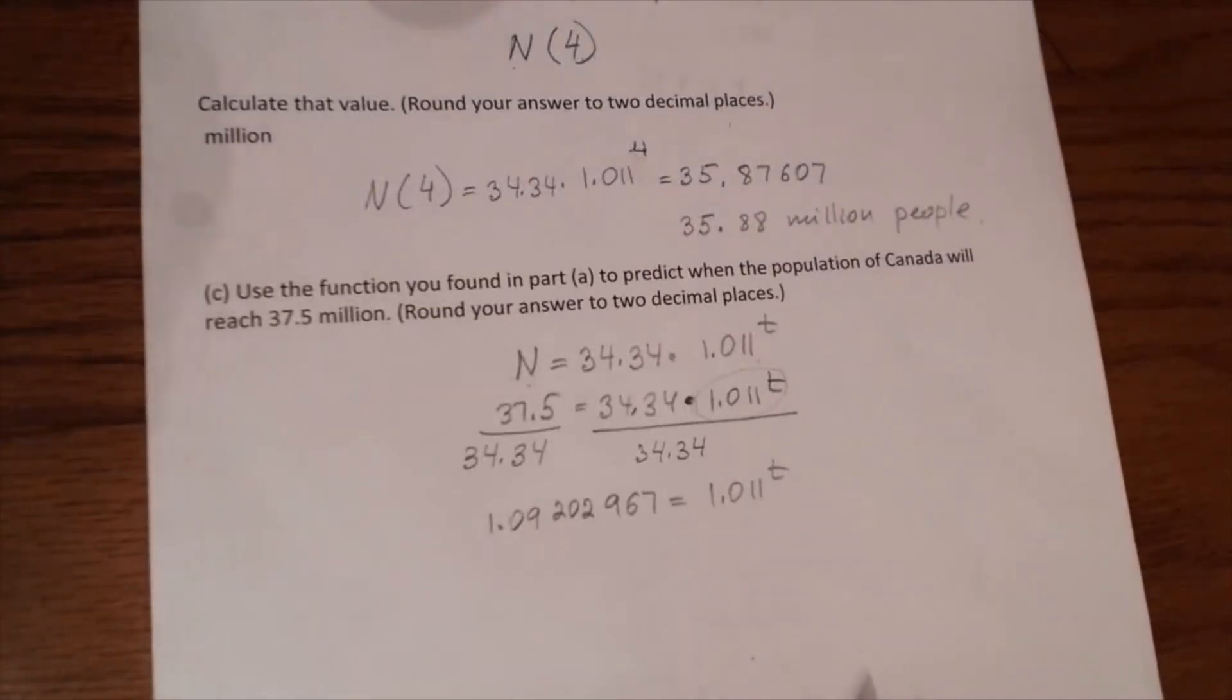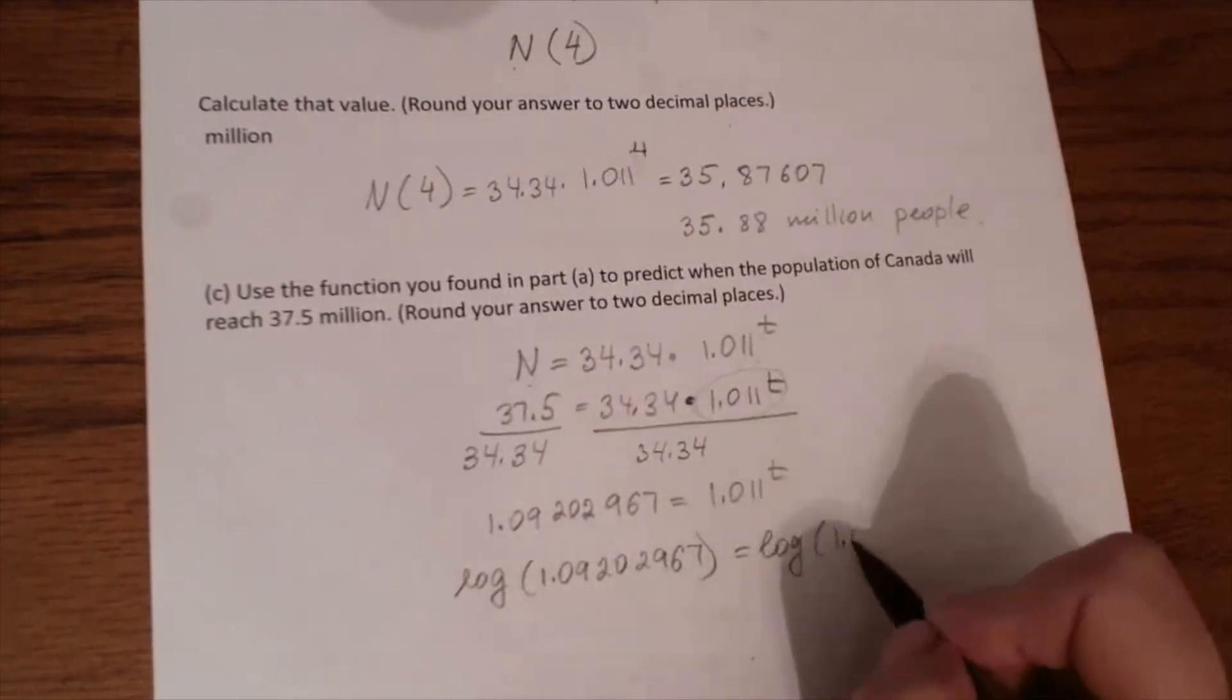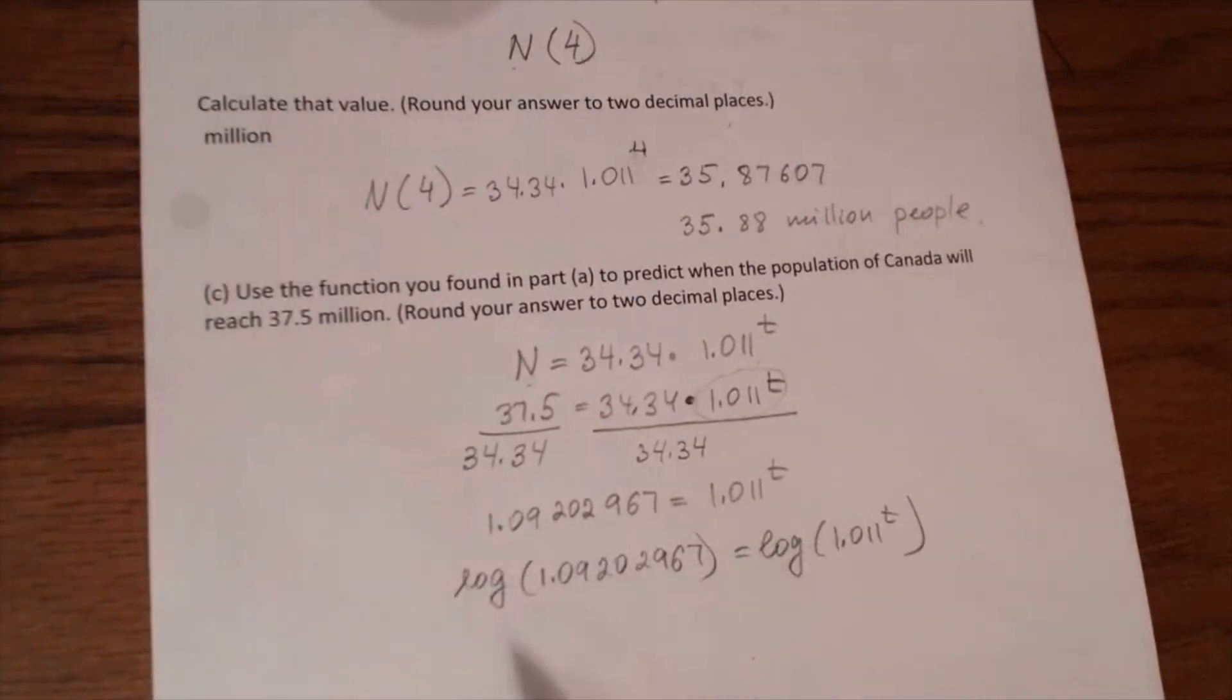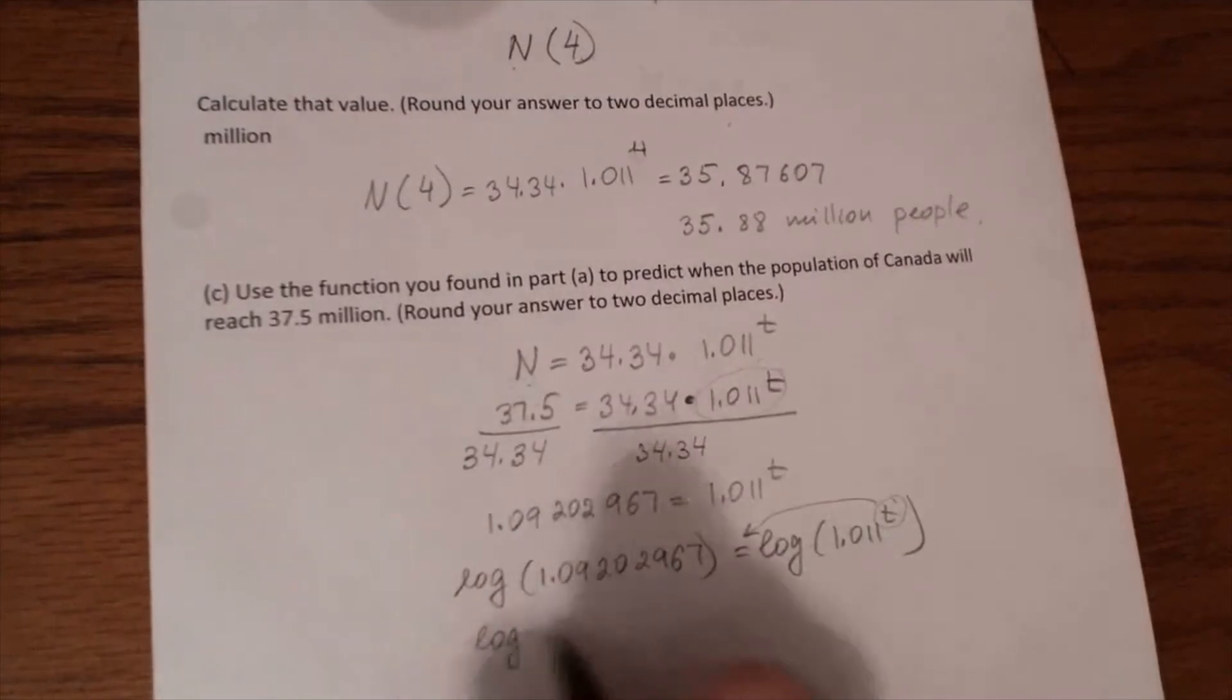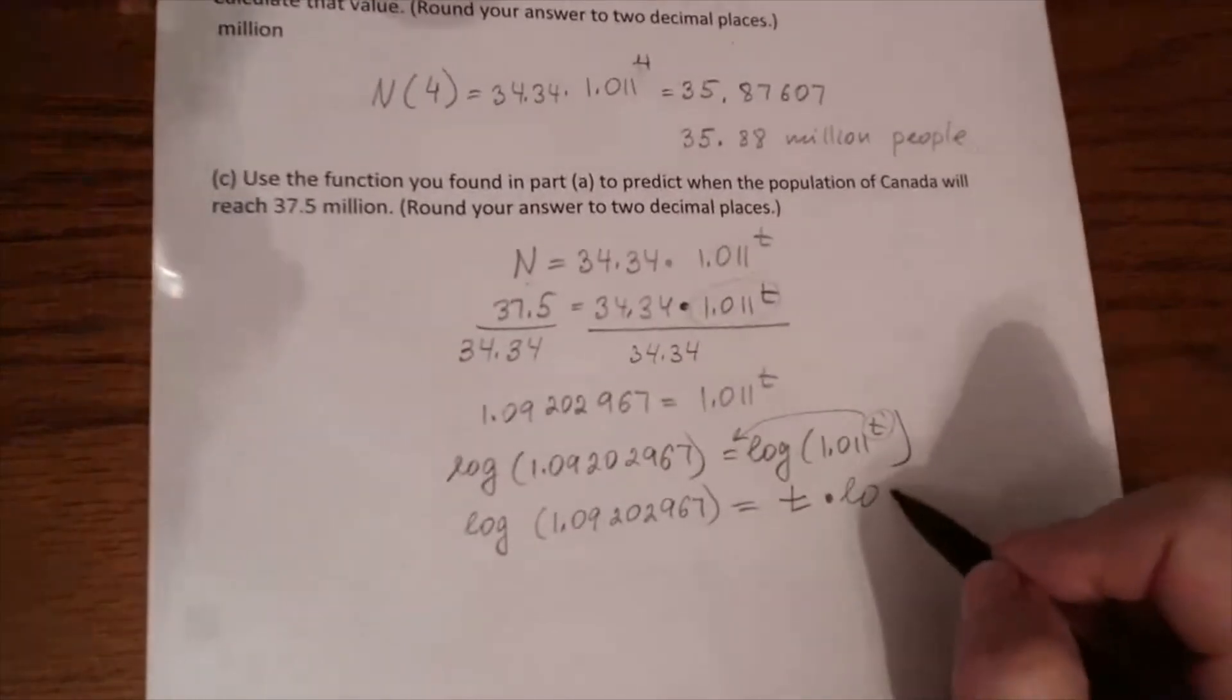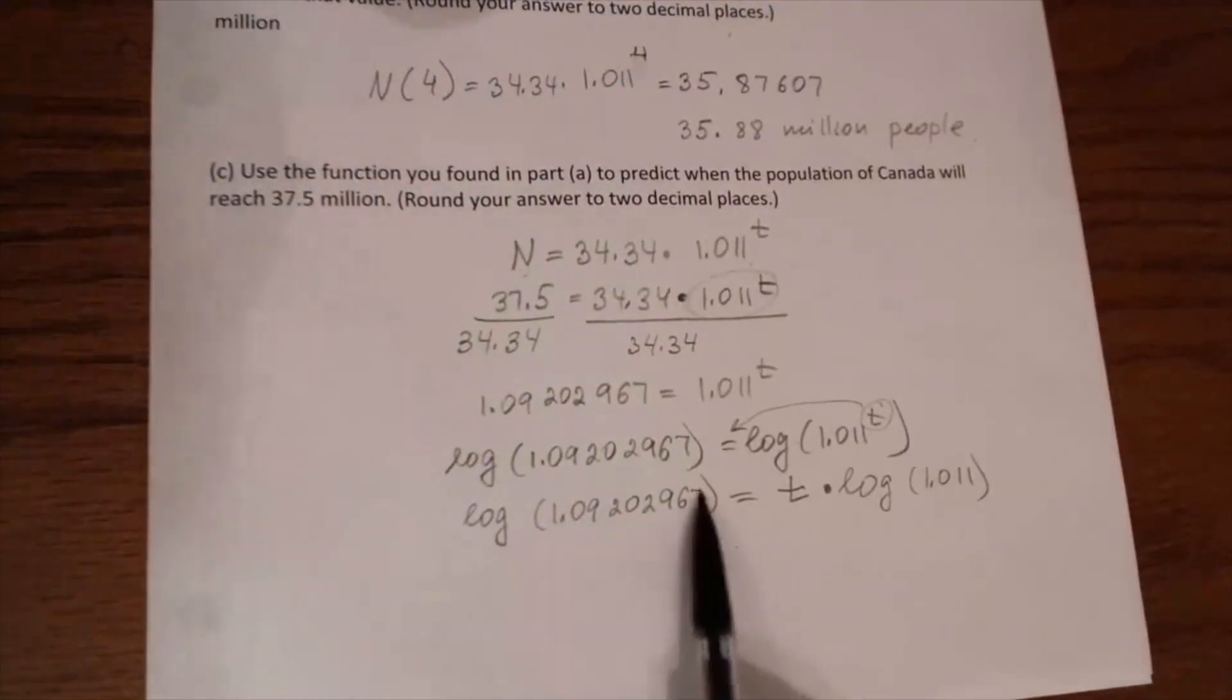Now we have base to the exponent on one side. And to solve this exponential equation, you have to use a logarithm to both sides. So you see that everything stays the same except I put logarithm in front of each side. The next step we will move our variable T in front of the logarithm. So the left side stays the same. On the right, we will have T times logarithm of 1.011. And now we have a linear equation because logarithm of a number is a number.